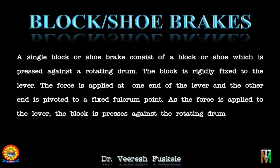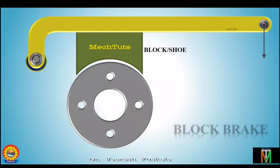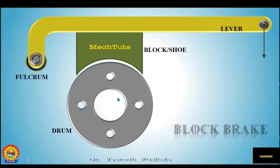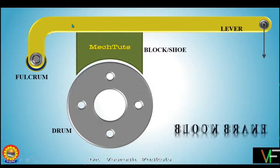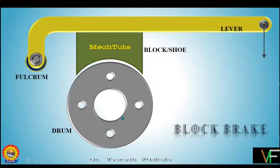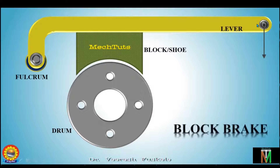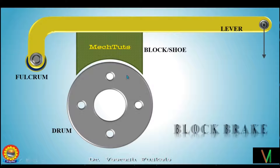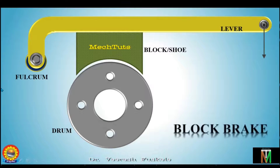Let's see how this is working. This is a typical single shoe or single block brake. This is the lever, and this is the fulcrum point to which this end of the lever is pivoted. This is the drum which will be rotating, and at the free end of the lever we will be applying the force so that the drum could be stopped.